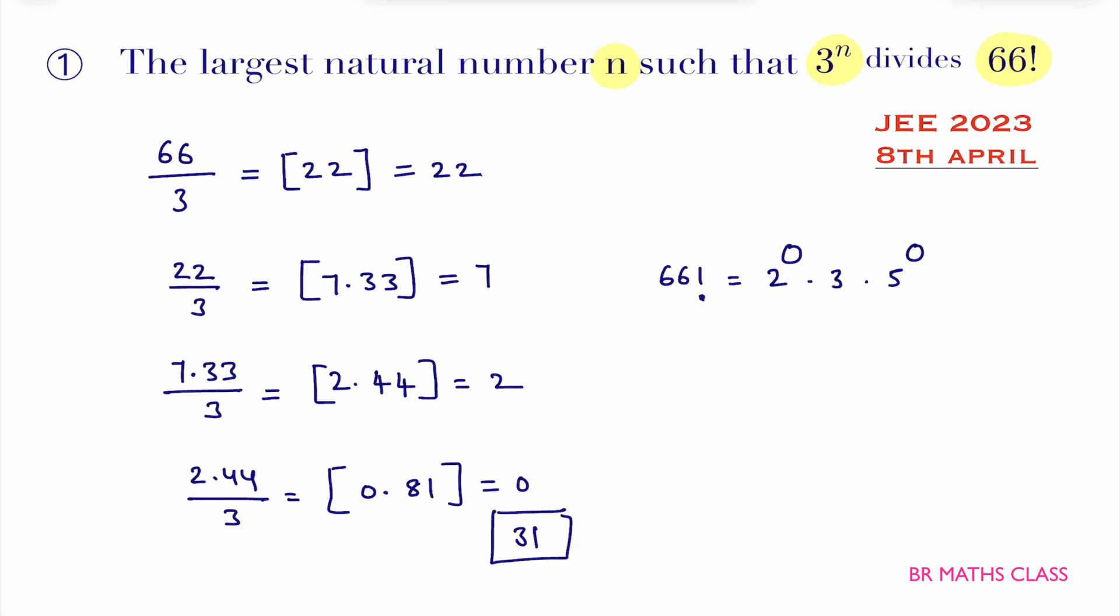If you add all these things, you are getting 31. You will get 3^31. So what is the largest natural number n such that 3^n divide 66 factorial? Here this n value is 31. So answer to this problem is 31.